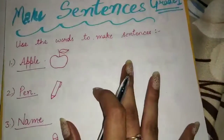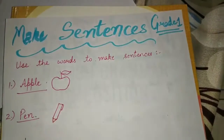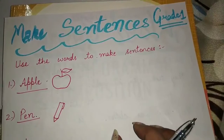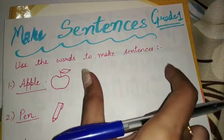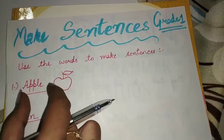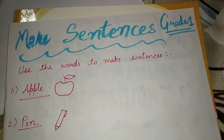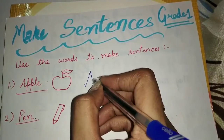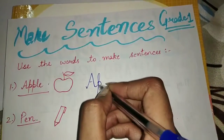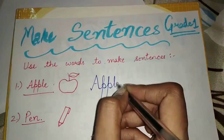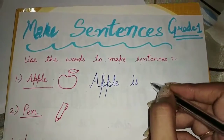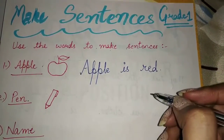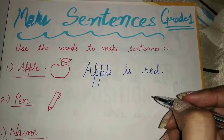Our first word is apple. We will make a line in which we will use the apple word. Sentence means to make a line in which we use that word. Like: Apple is red.